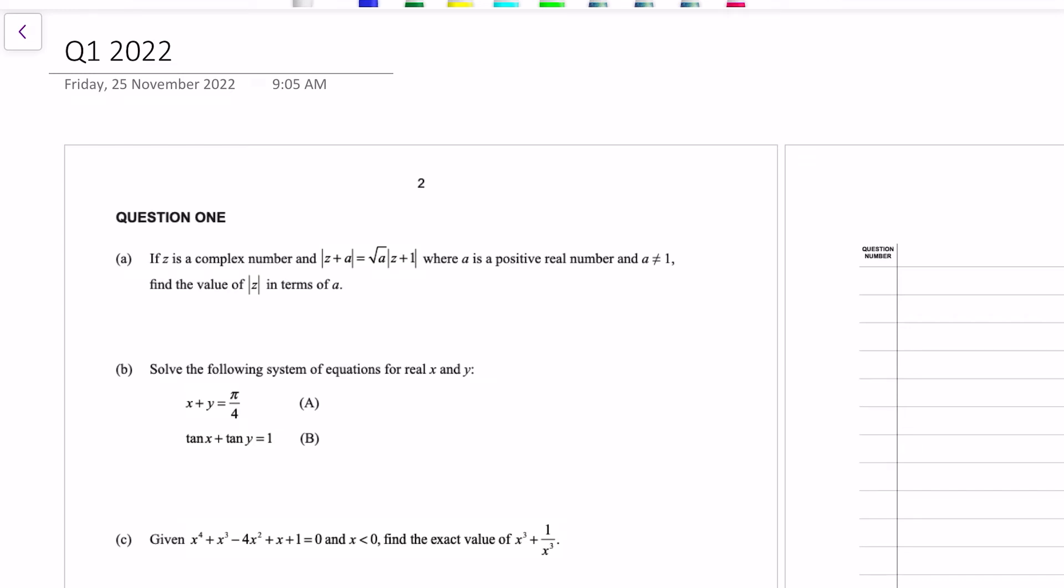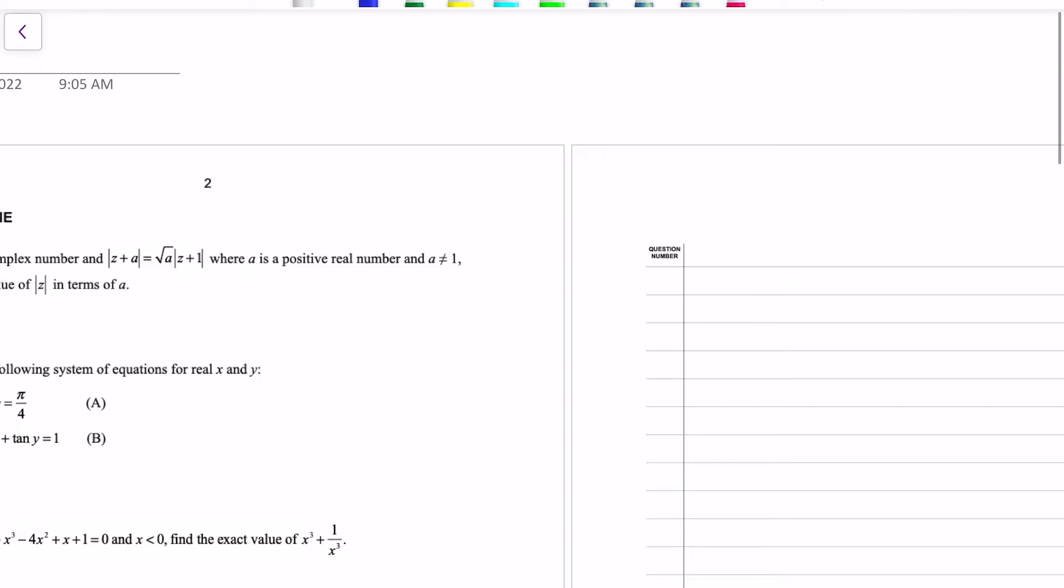Okay, so part A. Z is a complex number that satisfies this equation. A is positive and not equal to 1. The reason why it's not equal to 1 is because if we make A equal to 1, we get the equation modulus z plus 1 equals modulus of z plus 1. Now, that's true for all complex numbers. And if we consider the argon plane and all complex numbers in it, they all have different moduli. This question is telling us to find the modulus of z in terms of A, suggesting that it's a constant. If it has a constant modulus, irrespective of what z is, the locus of z must be a circle.